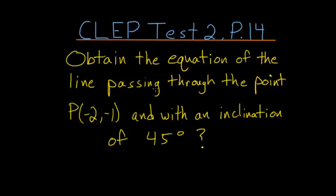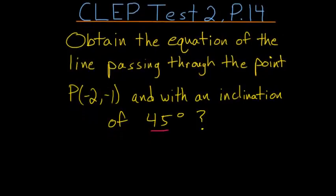Obtain the equation of the line passing through the point P(2,-1) and with an inclination of 45 degrees. Let's take a closer look at a line that has an inclination of 45 degrees.